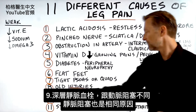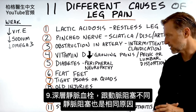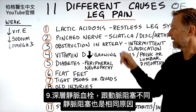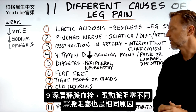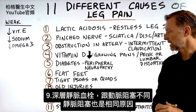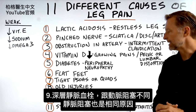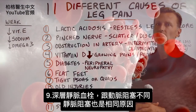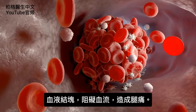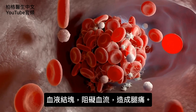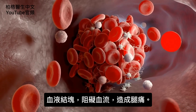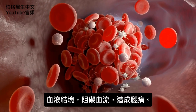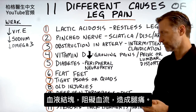Number nine: deep vein thrombosis. This is a bit different from the arterial obstruction, but you can have an obstruction in the veins as well, coming from the same root cause. An actual clot blocking blood flow is definitely going to cause leg pain.